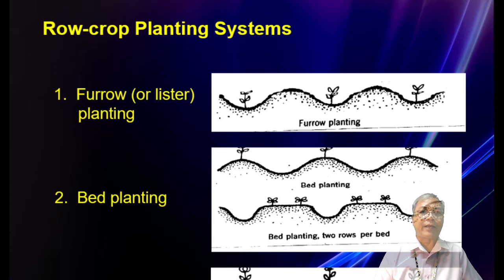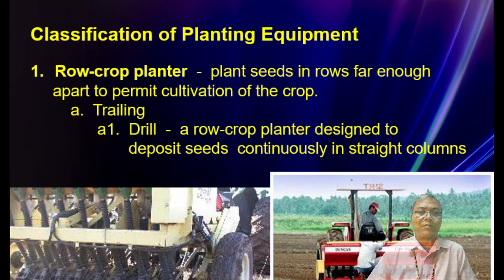Classification of planting equipment: Number one is the row crop planter, which plants seeds in rows far enough apart to permit cultivation of the crop. This is done by trailing or by drill — a row crop planter designed to deposit seeds continuously in straight columns.